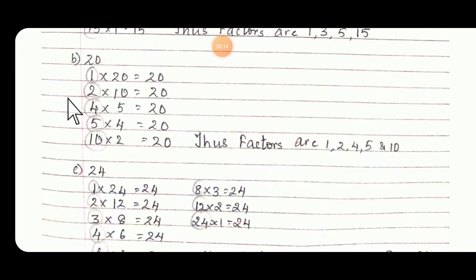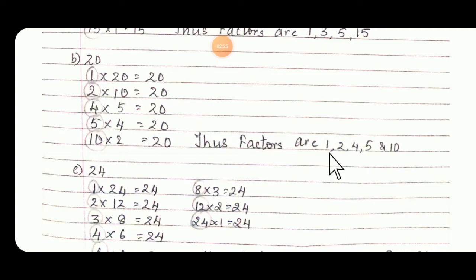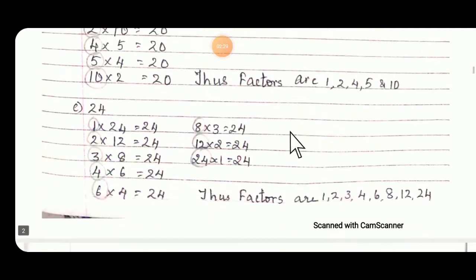Then 20. 1 into 20 you will get 20, 2 10s are 20, 4 5s are 20, 5 4s are 20, 10 2s are 20. Thus factors are 1, 2, 4, 5, and 10.